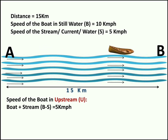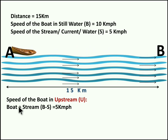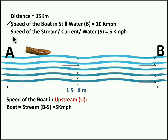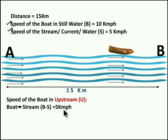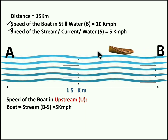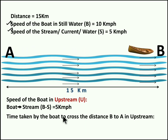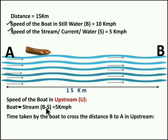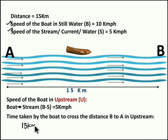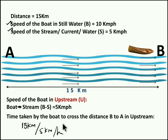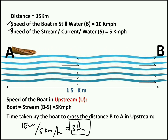Speed of boat in upstream is boat speed minus speed of the stream. Boat speed is 10 kilometers per hour and speed of the stream is 5 kilometers per hour, so 10 minus 5 is 5 kilometers per hour. While traveling from B to A, due to the opposite force of the current, the boat loses 5 kilometers per hour, so in upstream the boat travels at only 5 kilometers per hour. The time taken by the boat to cross from B to A in upstream: 15 km divided by 5 km/h equals 3 hours.